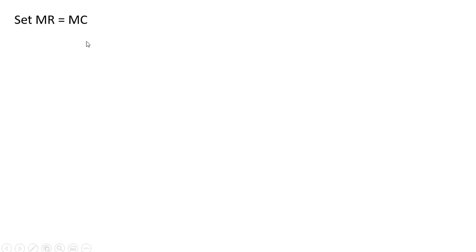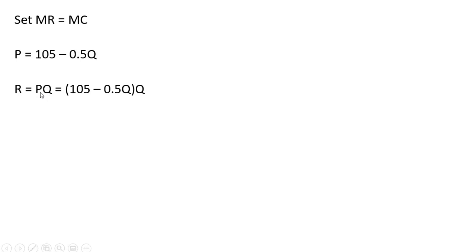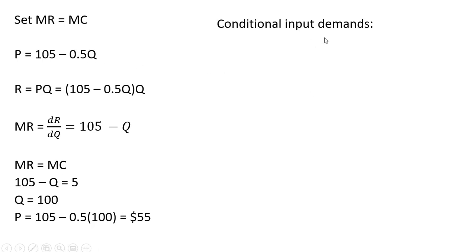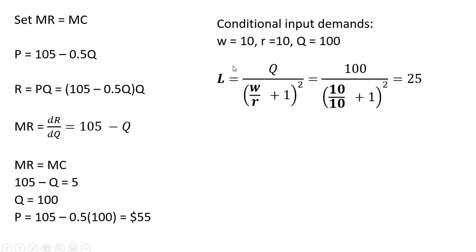Now we can start the standard profit maximization, setting marginal revenue equal to marginal cost. We take the inverse market demand to get revenue — revenue is price times quantity, replacing P with the inverse market demand. Taking the derivative of this revenue equation gives 105 minus Q. Setting 105 minus Q equal to the marginal cost of $5 and solving for Q, the firm will produce 100 units of output. It will set a price of $55 per unit by plugging 100 back into the inverse market demand. The firm will use 25 units of labor.